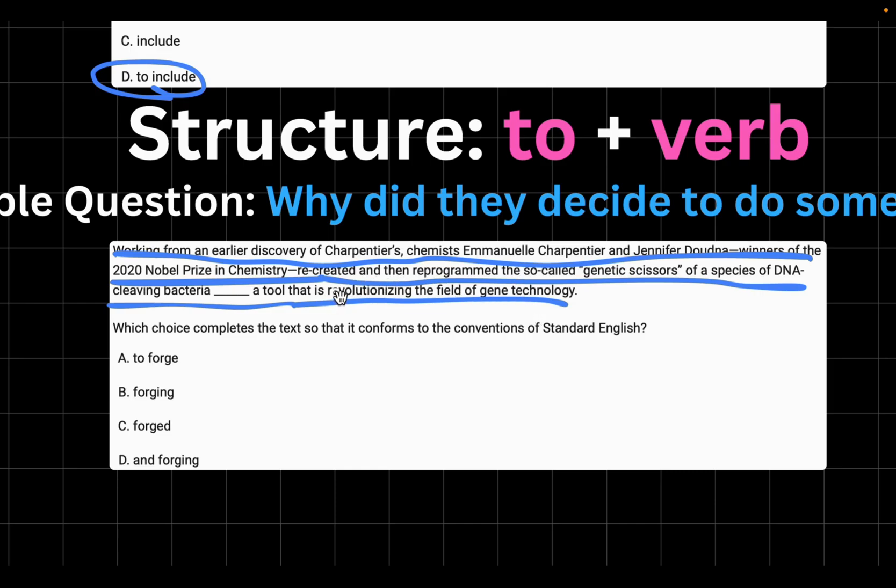Then we have choice B, forging. It says recreated and then reprogrammed the so-called genetic scissors of a species of DNA cleaving bacteria forging a tool that is revolutionizing the field of gene technology. Okay, to sum, this also sounds correct. Choice C, forged. It says recreated and then reprogrammed the so-called genetic scissors of a species of DNA cleaving bacteria forged a tool that is revolutionizing the field of gene technology. Okay, so to sum, this sounds right. So like, you're now confused. All three of these choices probably sound correct to you. However, let's also check choice D. Recreated and then reprogrammed the so-called genetic scissors of a species of DNA cleaving bacteria and forging a tool that is revolutionizing the field of gene technology. So you might have noticed that most of these choices sound right.